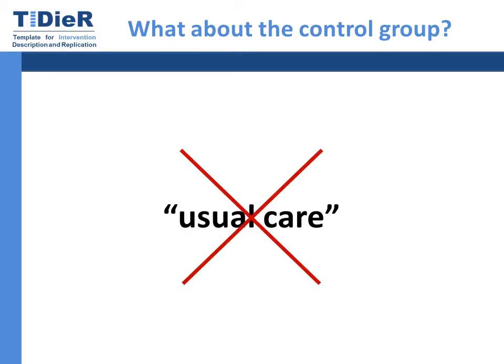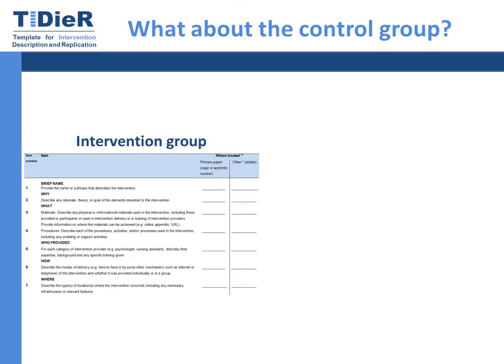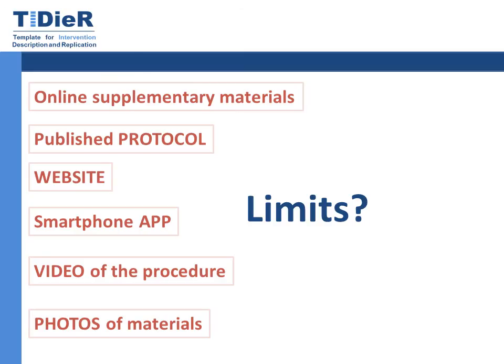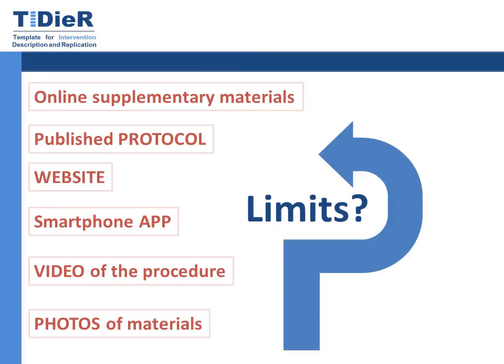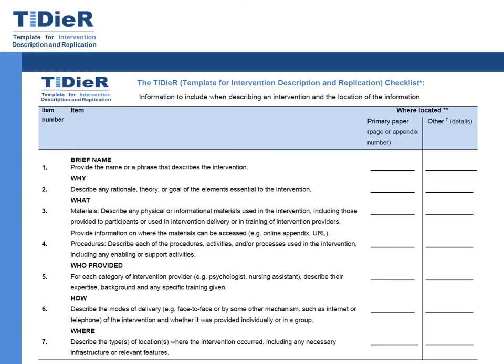Describing the care that each group received will usually mean providing a separate checklist for each group in the study. For some interventions, it won't be possible to include all the information details in the primary paper. It might need to be in other locations, such as online supplementary materials, a protocol, a website, or a combination of these. We encourage authors to think outside the box and consider the most useful way to share details of their intervention with readers. The TIDIA checklist also encourages authors to state where they have provided this information.